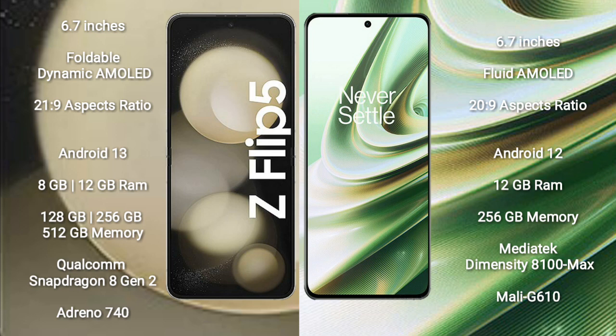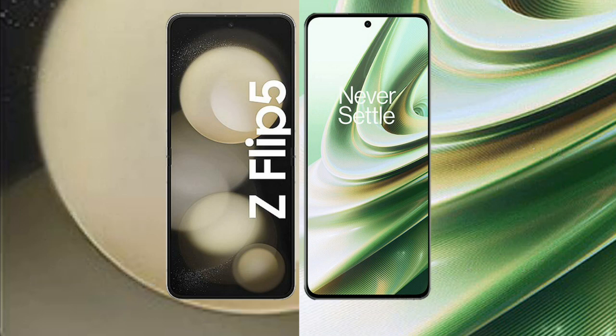OnePlus 10R comes with 12GB RAM and 256GB internal storage, with a MediaTek Dimensity 8100 Max processor and Mali-G710 GPU.